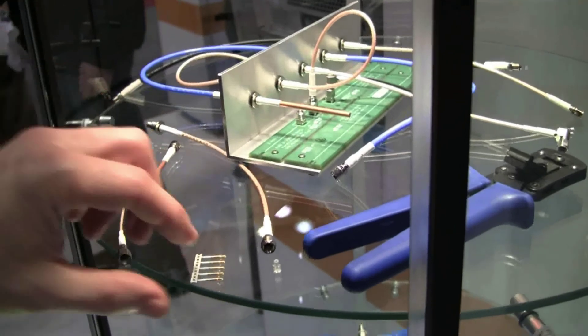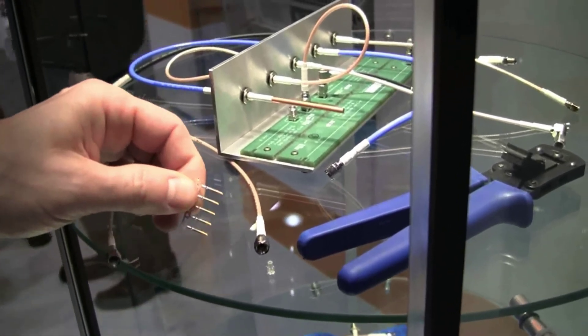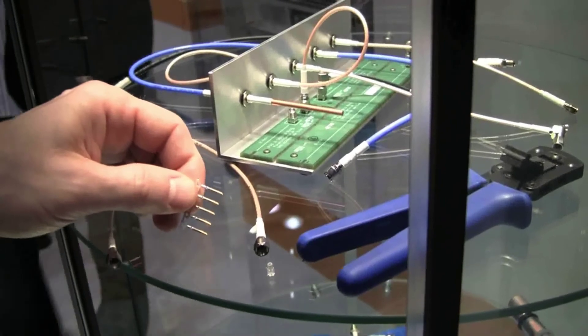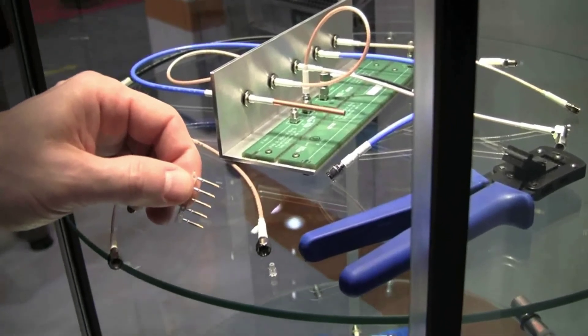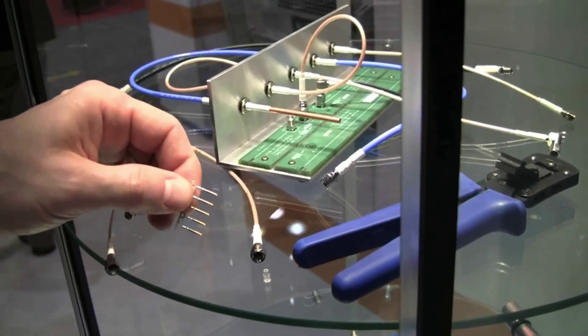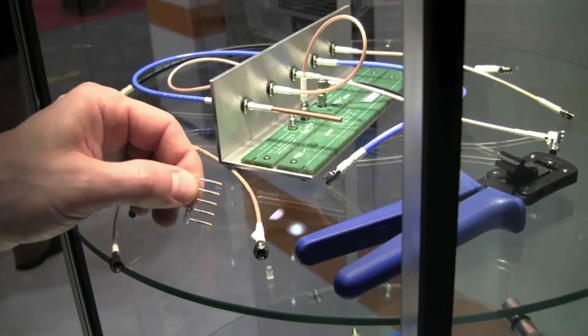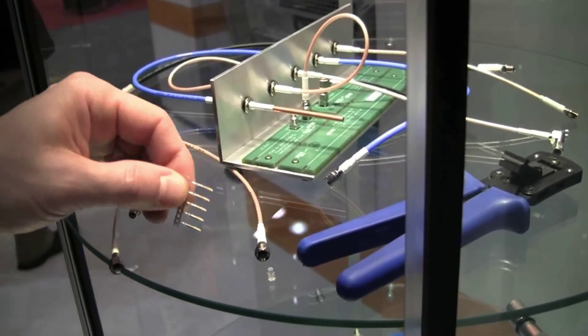The contacts inside, here we see an example of contact pins, those are stamped and formed with a stripe of gold on the tip to give you the mating cycles you need but avoiding putting costly gold all over the contact pin and a stripe of tin on the back end to make it easier to solder to.